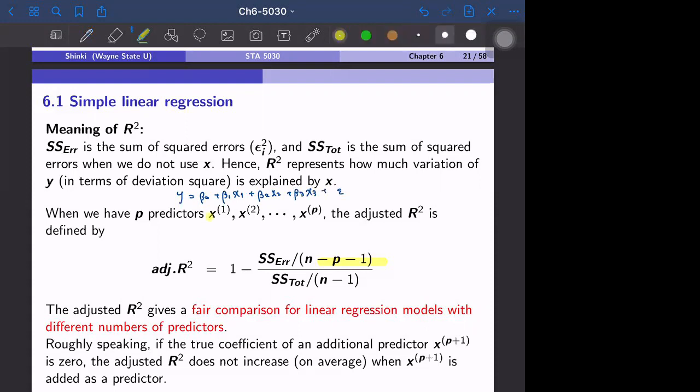in general that we have p predictors x^(1) to x^(p), then adjusted R-square is defined by this quantity. So we divide SS_error by a smaller number.